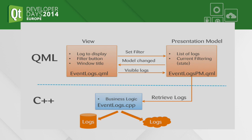The view can get a copy of the logs that have to be displayed according to the filter at any time. In the other direction, each time we change the filter, the view sends a signal to the presentation model, so the presentation model knows which logs have to be displayed in which situation.